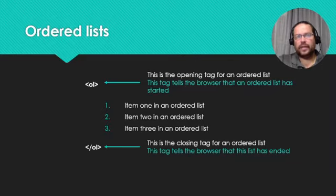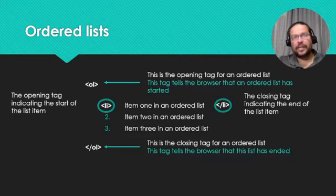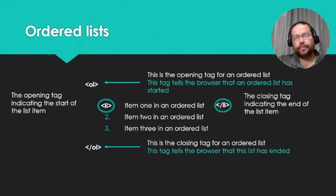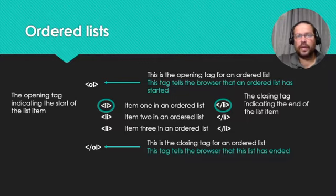Each list item — as you can see we've got three items — is going to have to use an LI tag at the front, which indicates the start of the item, and then a closing LI which indicates the end of that particular item. Because we have three items, we need three sets of these list item tags, each one showing the start and end of the item.